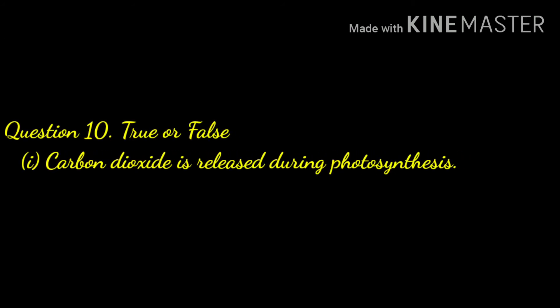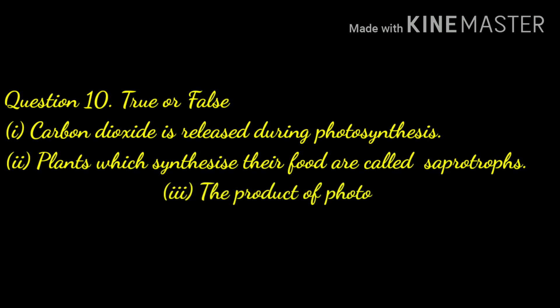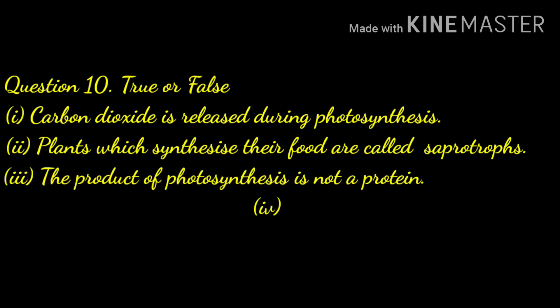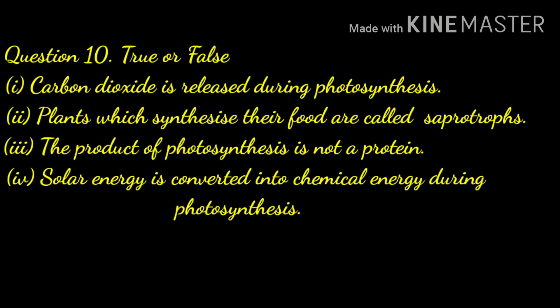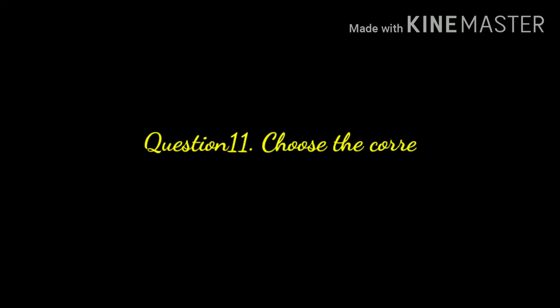Question number ten: true or false. Carbon dioxide is released during photosynthesis — false. Plants which synthesize their own food are called saprotrophs — false. The product of photosynthesis is not a protein — true. Solar energy is converted into chemical energy during photosynthesis — true.